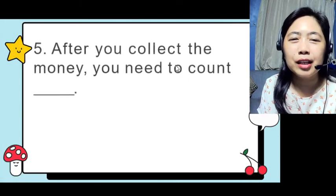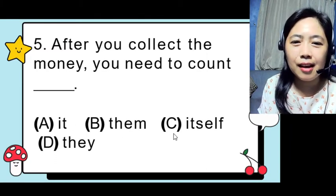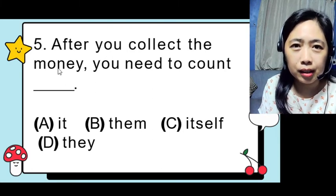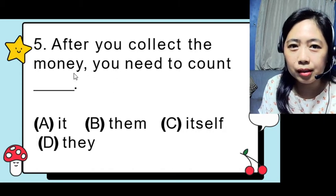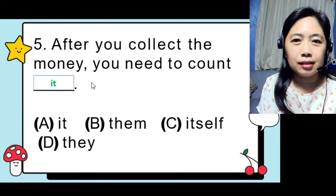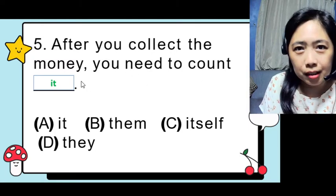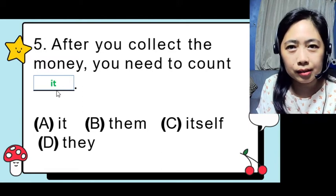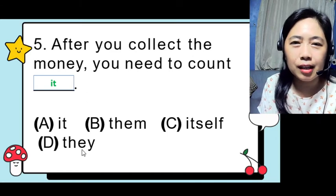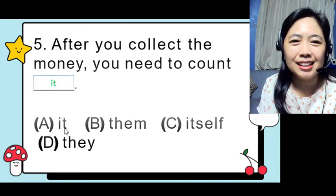Number five: 'After you collect the money, you need to count ___.' Choices: it, them, itself, they. The subject being replaced is 'the money,' which is a singular noun. So the correct answer is 'it.' We can say 'you need to count the money' — the 'it' refers to the money. 'Them' is plural, 'itself' is possessive/reflexive, and 'they' is another pronoun, so none of those fit.